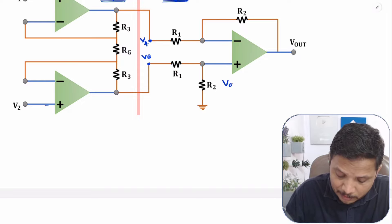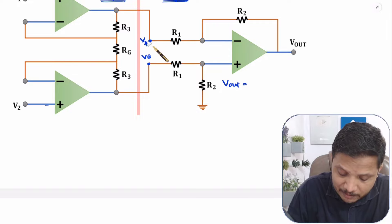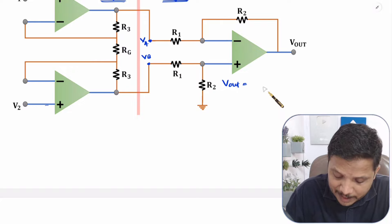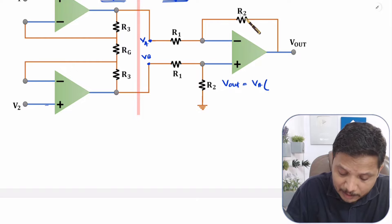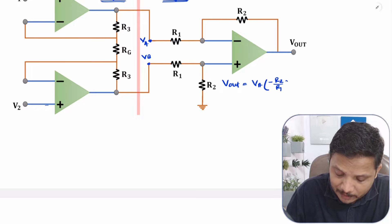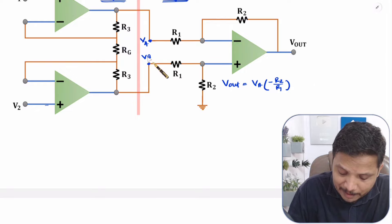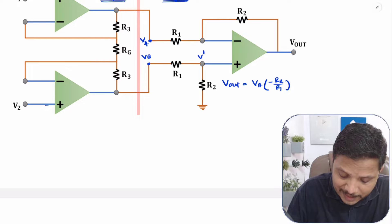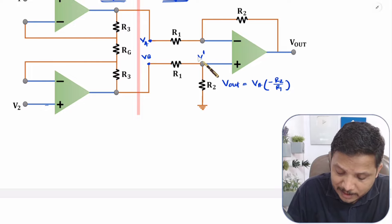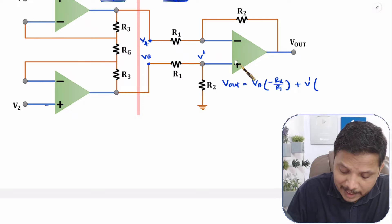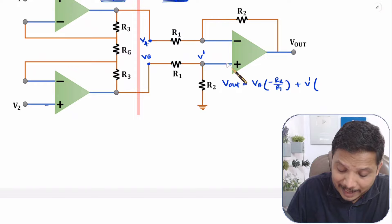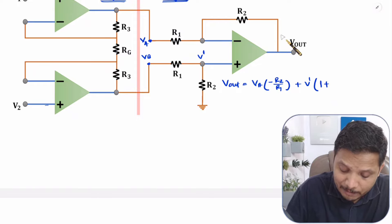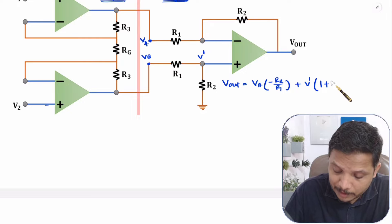Let us calculate Vout due to VA first. VA is given to the negative terminal, so Vout due to VA equals VA multiplied by the gain in inverting mode, which is minus RF over R1. Here RF is R2, so the gain is minus R2 over R1. Now for Vout due to VB, let the voltage at the non-inverting input be V dash. Vout due to V dash equals V dash multiplied by the gain in non-inverting configuration with negative feedback, which is 1 plus RF over R1, where RF is R2, giving 1 plus R2 over R1.